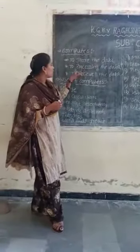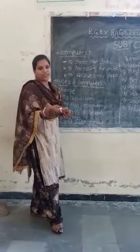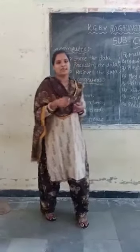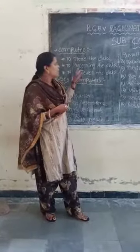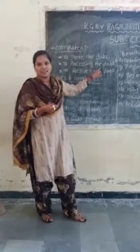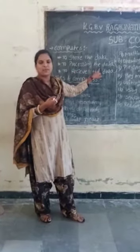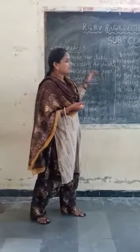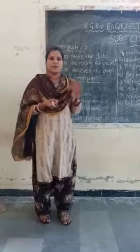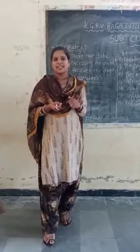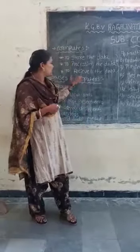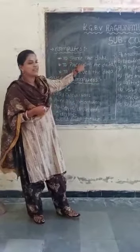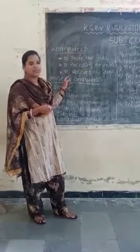That is, store the data and processing the data. Processing the data means working with the information we have. The CPU handles this processing. CPU means Central Processing Unit. And next, receive the data — we receive the information after processing. So, computer means to store the data, to process the data, and to receive the data.